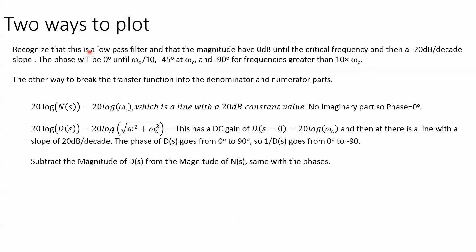There are really two ways to plot that simple RC low-pass filter — you'll do it so much you'll probably have it memorized. If there is no gain, or it's a gain of one, you're going to have 0 dB up until a critical frequency, and then a -20 dB per decade roll-off. The phase will be zero up to a tenth of the cutoff frequency, -45 degrees at the cutoff frequency, and -90 degrees for frequencies greater than ten times the cutoff frequency.